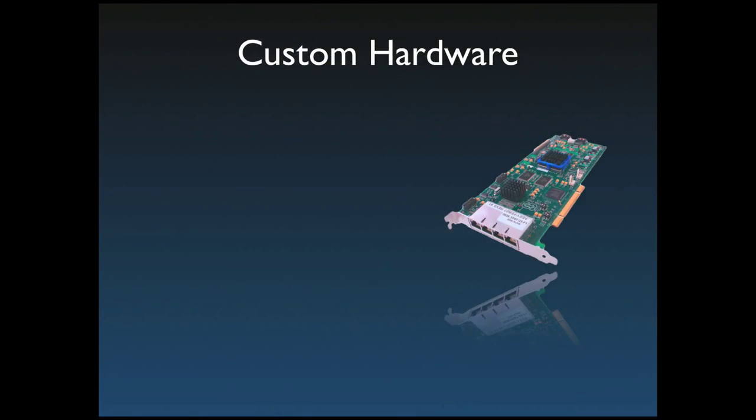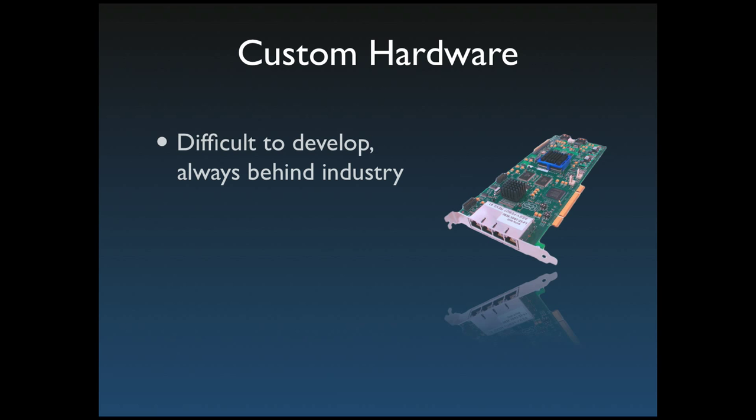The second thing we tried was to build our own switches and routers using custom hardware. Looking back, this turned out a lot harder than we had originally expected. It's really, really hard to build your own router or switch — industry typically spends in the order of $50 million to get from nothing to a fully working system. In academia, $50 million is a lot of money. And even if we could do it, it would take several years to build, and we'd always be lagging behind industry. That's not what we want.